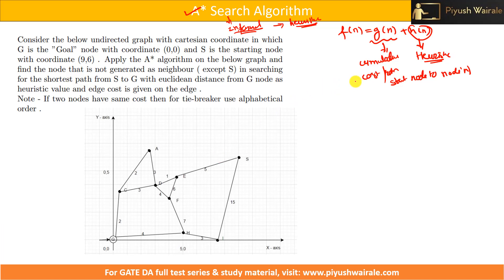We need to calculate the heuristic value of each and every node, find f(n) for each, and go to the node with the lesser f(n). Remember: f(n) is the evaluation function — our decision basis. g(n) is the cumulative cost from start to current node, same as used in uniform cost search. h(n) is the heuristic value.